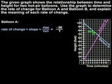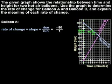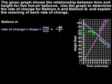A common mistake is to say that the rise is negative 1 instead of negative 50. But notice that each mark on the y-axis represents 50 units. So we're actually going from 800 to 750, which means that our rise is negative 50.